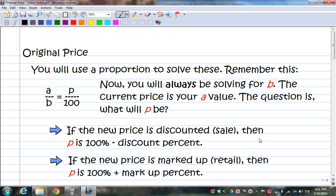Now these problems are a little bit tricky. First of all, we're going to use a proportion to solve them. Now remember this, our good old friend here, a over b is equal to p over 100. We're going to use that exact same proportion that we used before, except now we are always going to be solving for b.